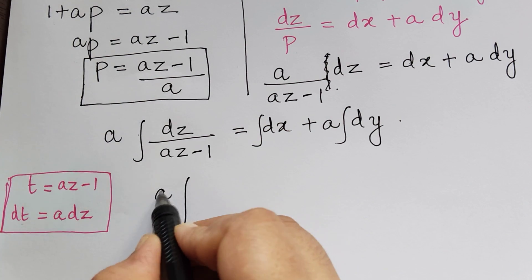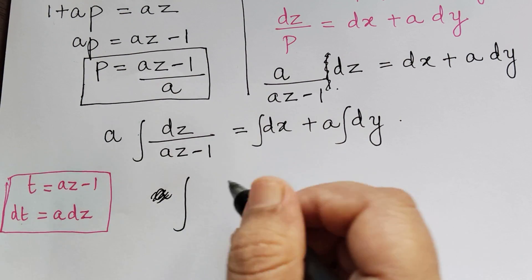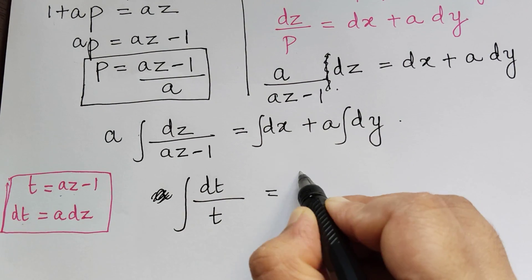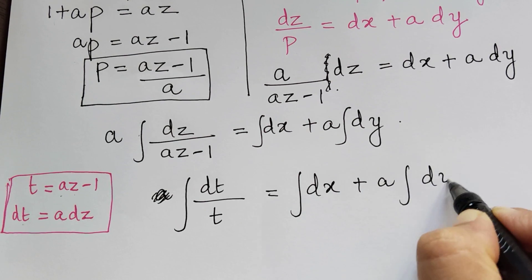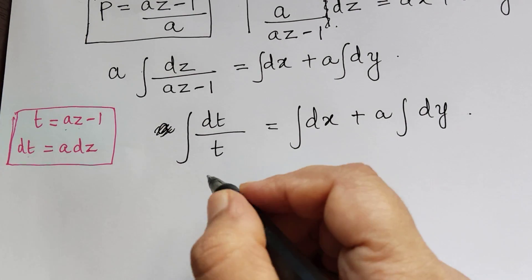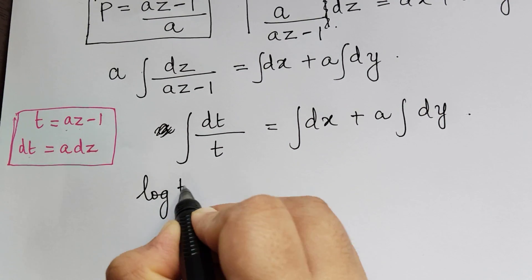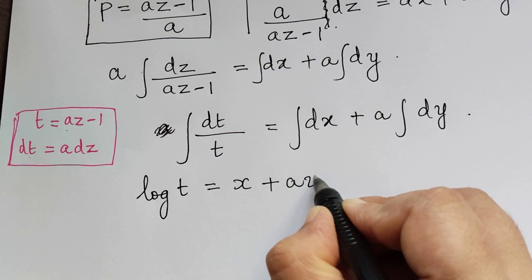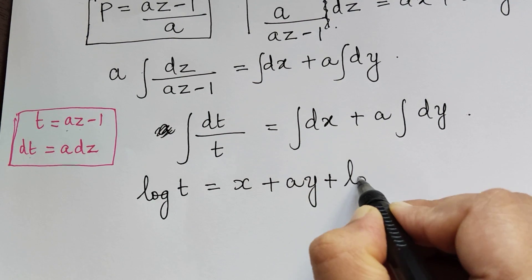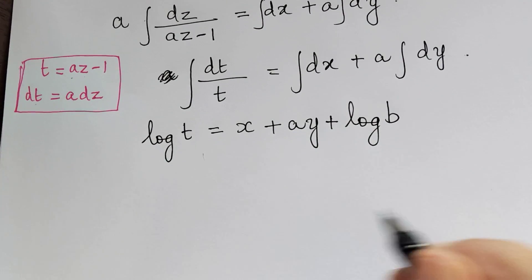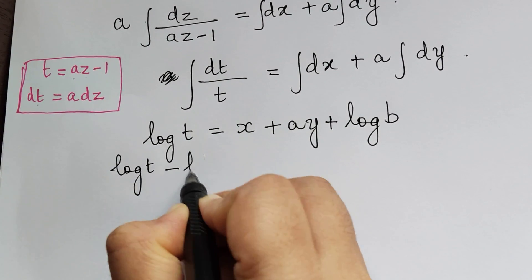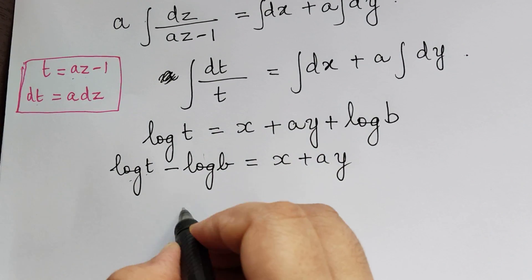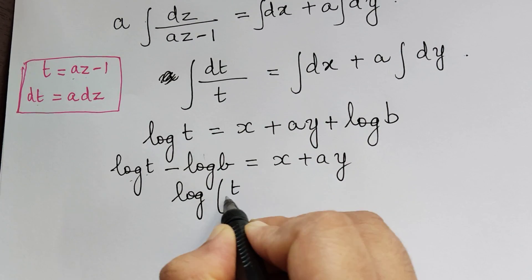After the substitution, a dz together equals dt, so the left side is integral of dt/t. The integral of dt/t is log t. So we get: log t = x + ay + log b, where log b is the constant of integration. Taking log b to the left: log t − log b = x + ay. By the log rule, log(t/b) = x + ay.